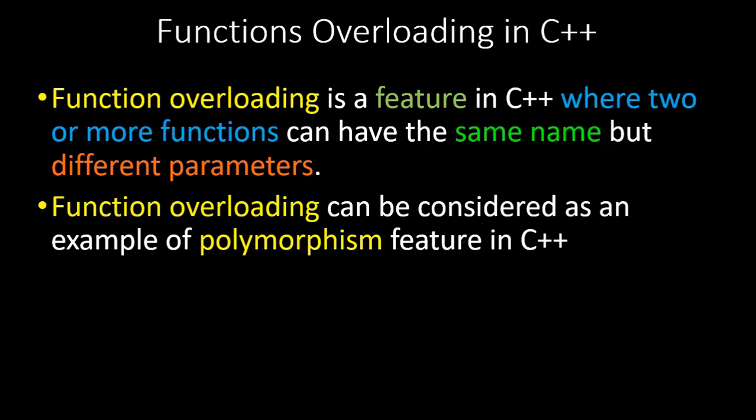Let's quickly recap what function overloading in C++ is. Function overloading is a feature where two or more functions can have the same name but different parameters, and it can be considered an example of polymorphism. For now, just understand that we are using the same name but with different parameters.